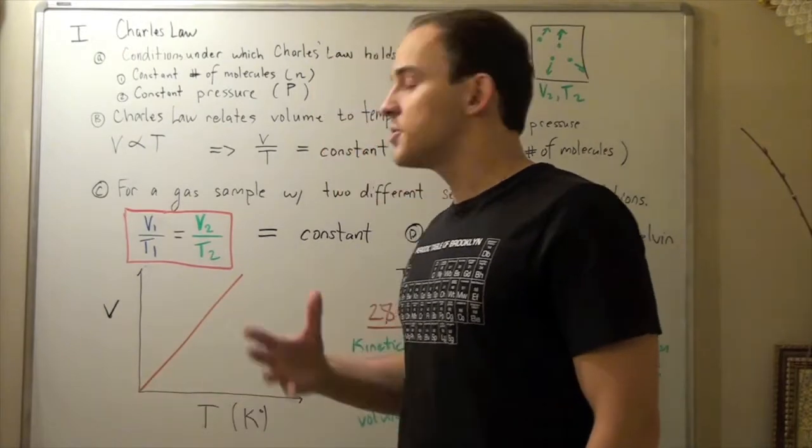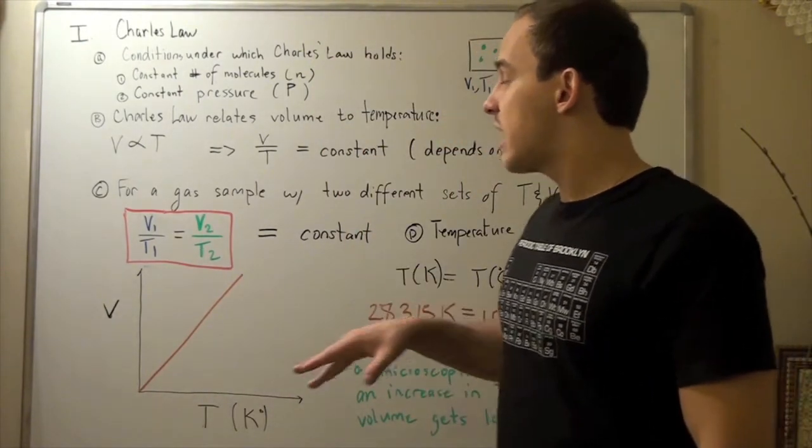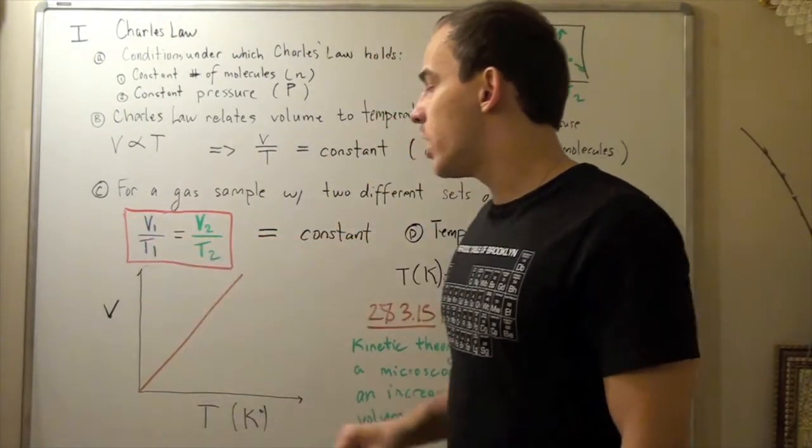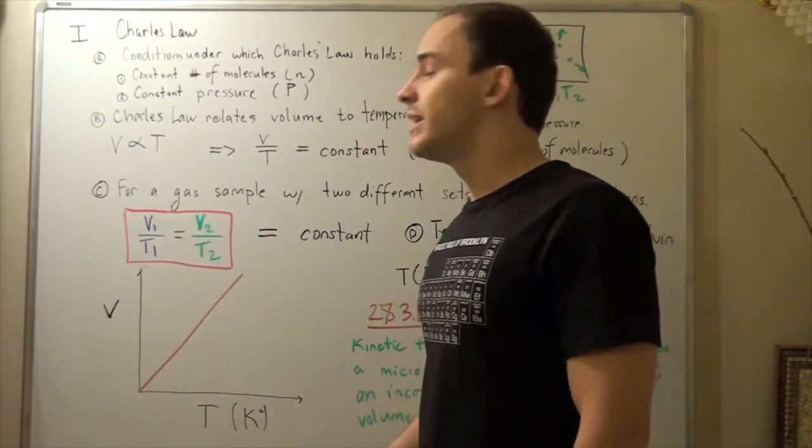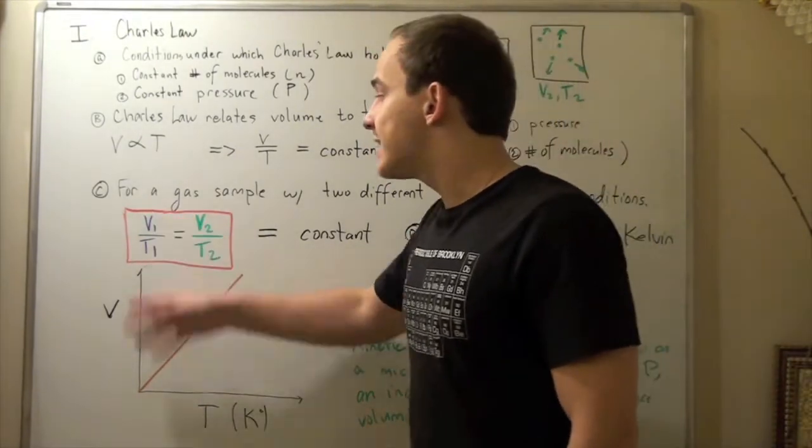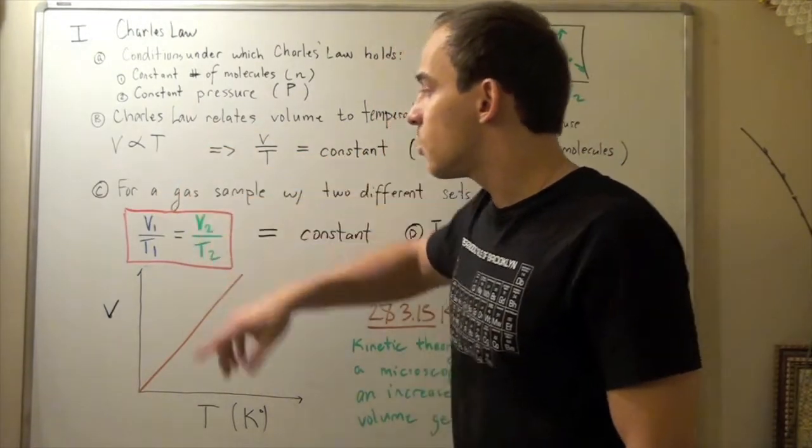Notice that V1 over T1 means that our T1 can't be zero. Otherwise, we get an undefined number, a number that has infinity as its answer, because any number over zero is infinity.